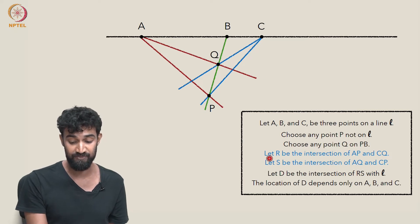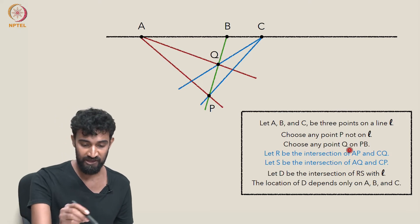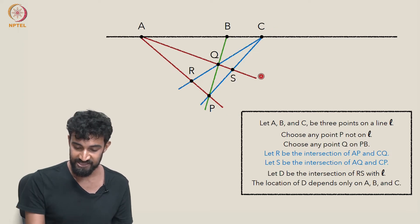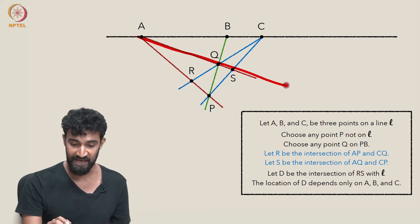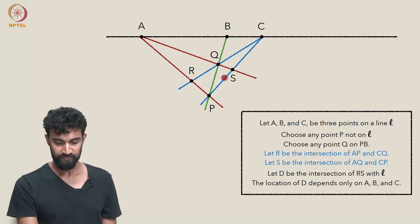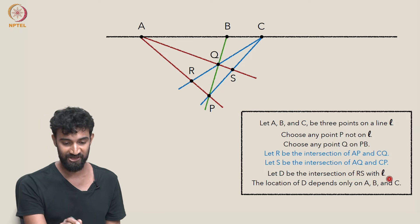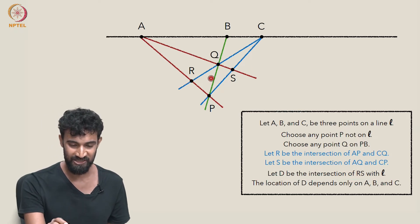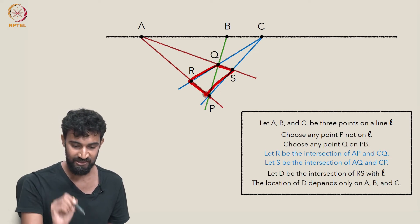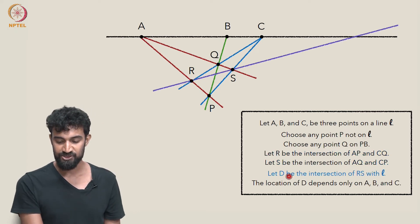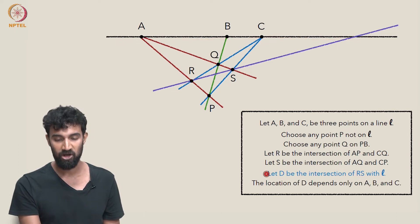And then let's mark these points R and S. R is the intersection of AP and CQ. So this is R. And S is the intersection of AQ and CP. So this is S. What's the next step? Let's let D be the intersection of RS with L. So we want to consider this diagonal. So diagonal meaning that we've created a quadrilateral here, P, R, Q, S. So there's one more diagonal, RS. And if we draw it, we can consider the intersection of it with our original line L. And let's call that D.